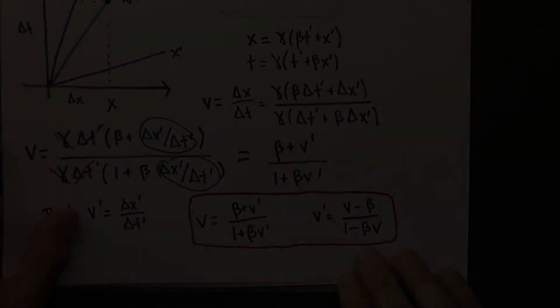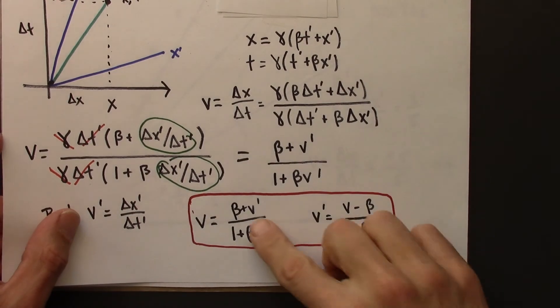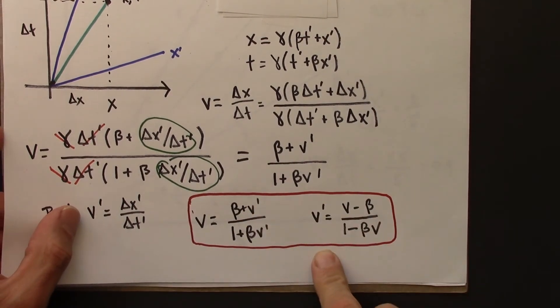It's just like with the Lorentz equations. There's sort of two forms, the forward and backwards form of the Lorentz equations. Same thing with the velocity transformation equations.